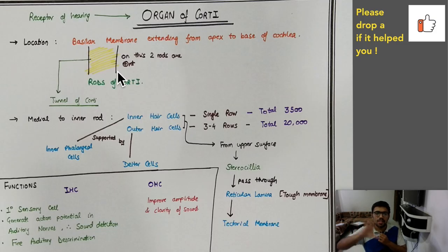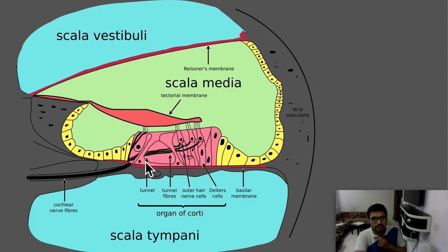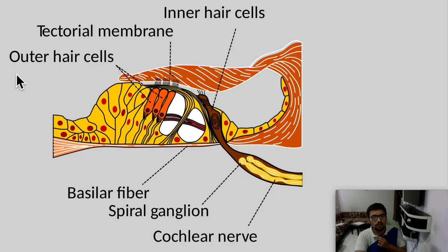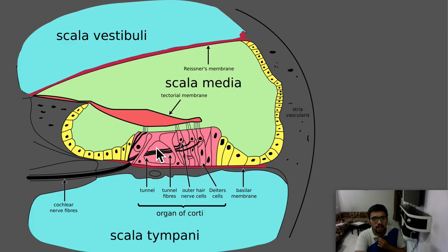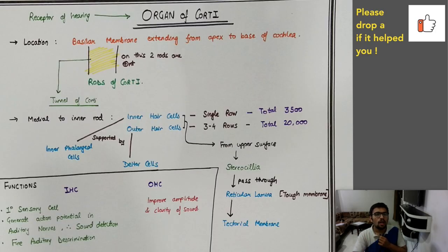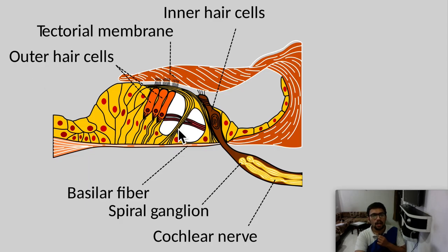On the basilar membrane, two rods are present called the rods of Corti. The space between the two rods is called the tunnel. So there is an inner rod and an outer rod, and the tunnel is formed between them.